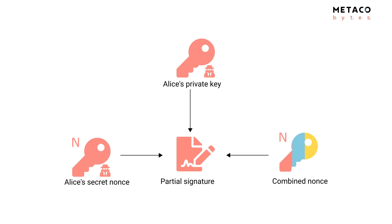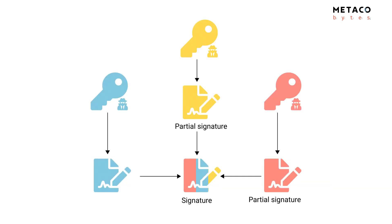Once they have a combined nonce, each participant — Alice, Bob, and Carol — can generate a partial signature. They need the secret nonce, the combined nonce, and the private key they are signing with. Once everybody has signed, you can simply add those partial signatures together and you will have a valid signature to put on the blockchain.